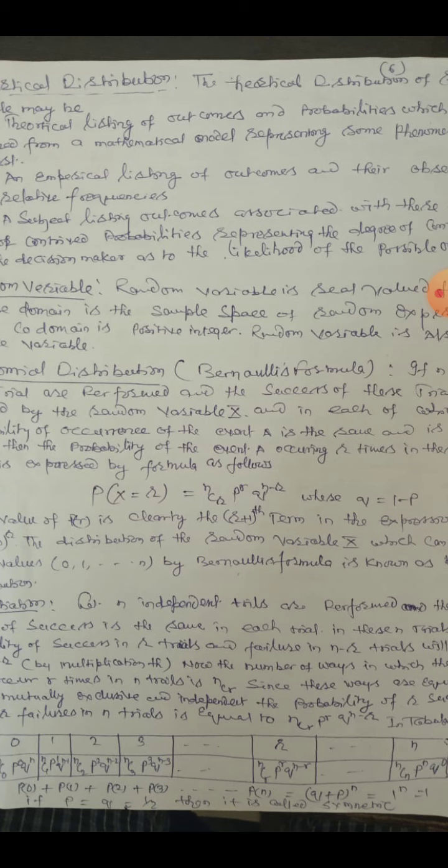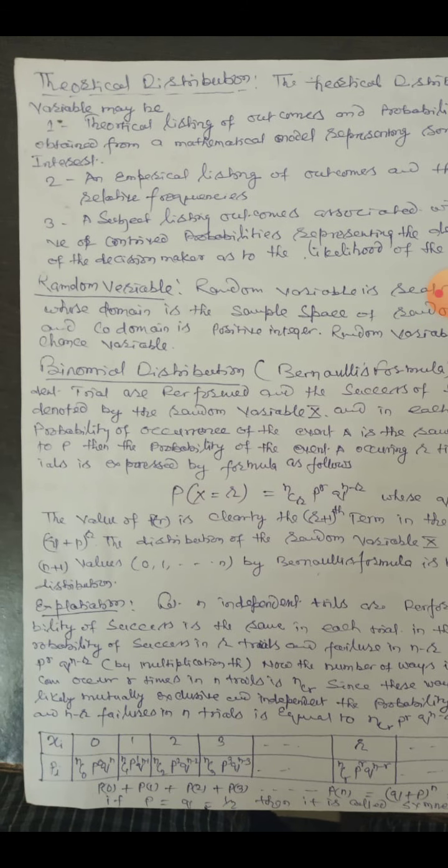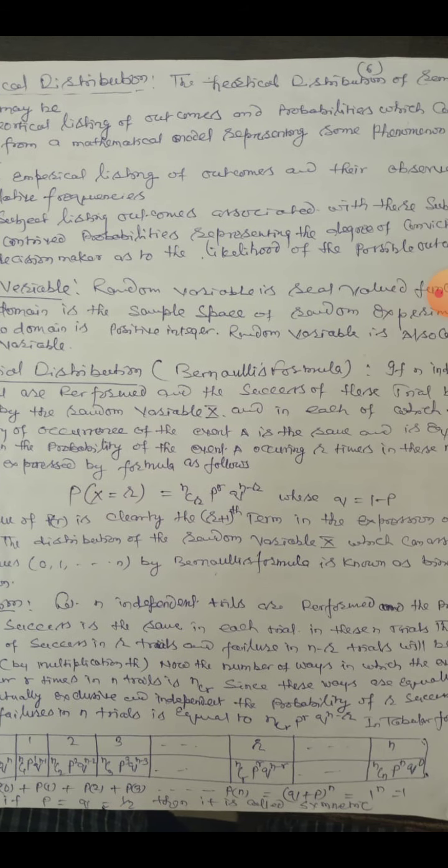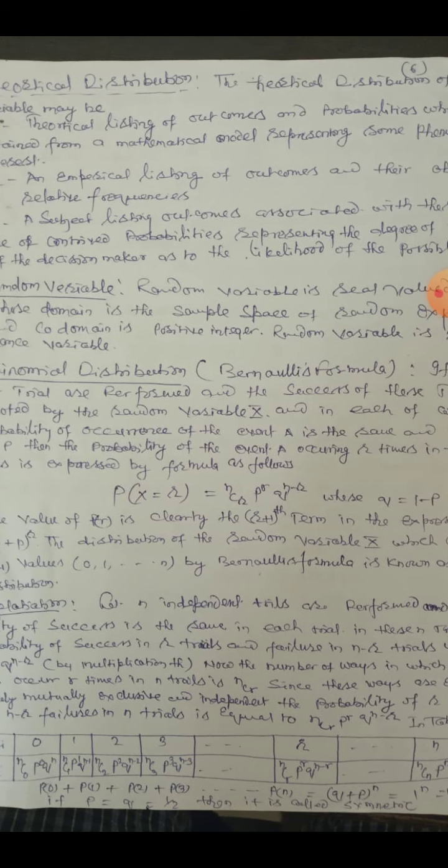Now, the number of ways in which the event can occur R times in N trials is NCR. Since these ways are equally likely, mutually exclusive, and independent, the probability of R successes and N minus R failures in N trials is equal to NCR × P^R × Q^(N-R).